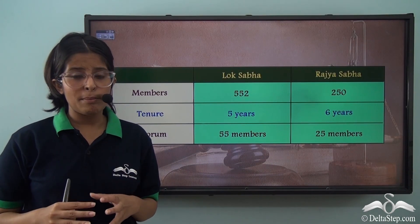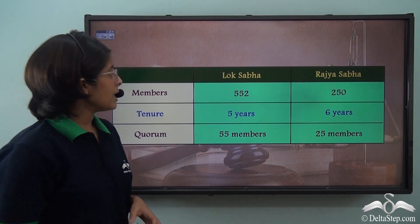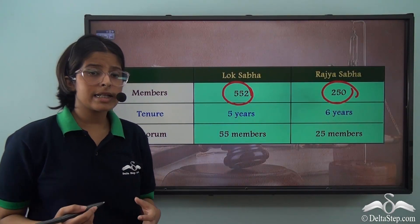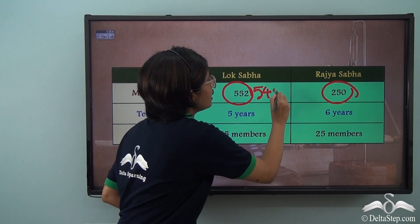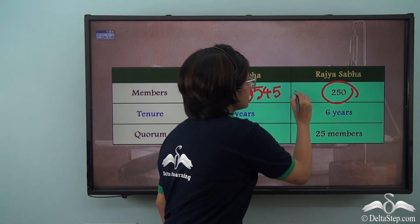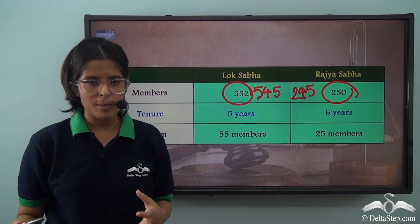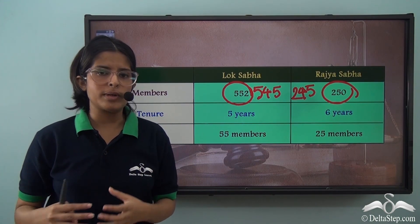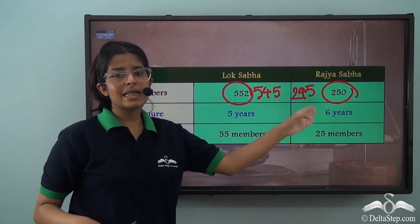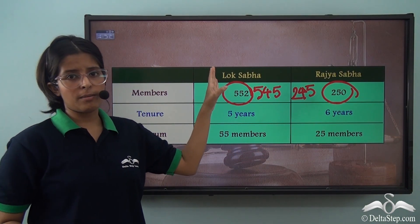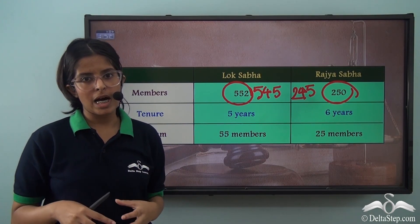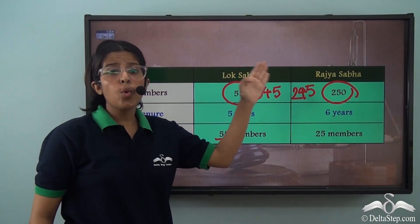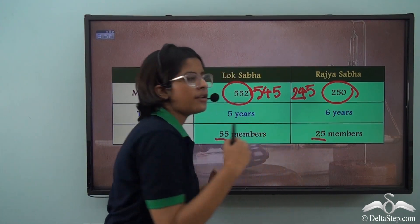The maximum number of members in the Lok Sabha is 552 and in the Rajya Sabha is 250. In the current status quo, the Lok Sabha has 545 members and the Rajya Sabha has 245 members. The tenure of the Lok Sabha is 5 years and that of the Rajya Sabha is 6 years. The quorum of the Lok Sabha is one-tenth of the total membership, that is 55 members, while the quorum for the Rajya Sabha is 25 members.